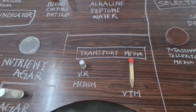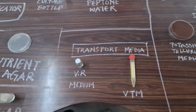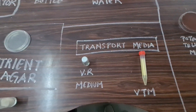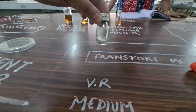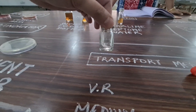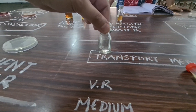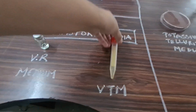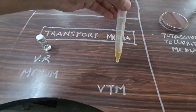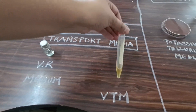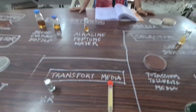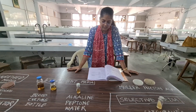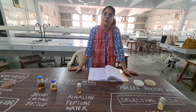Transport media are used when fastidious organisms cannot survive during transport. Here is VR medium — Venkatraman-Ramakrishnan medium — used for transport of Vibrio cholerae. Second is viral transport medium, used for transport of viral specimens. Other transport media include Stuart medium, used for transport of Gonococci, and glycerol saline medium, used for transport of Shigella species.